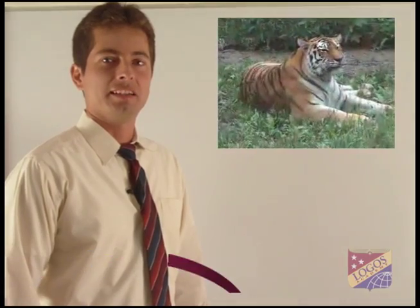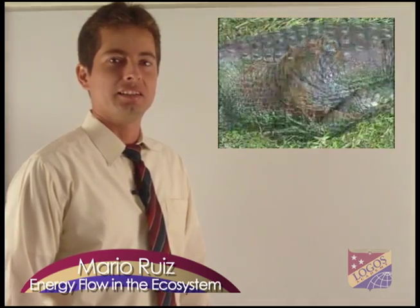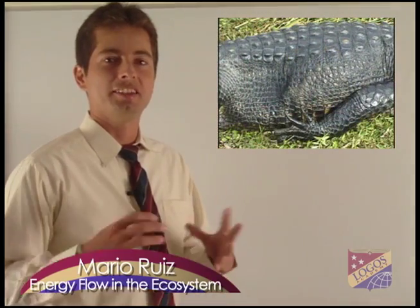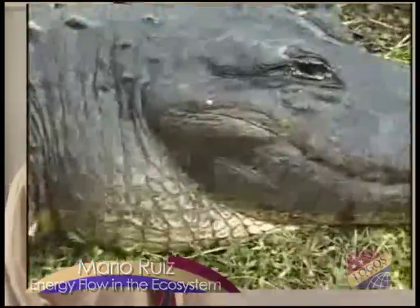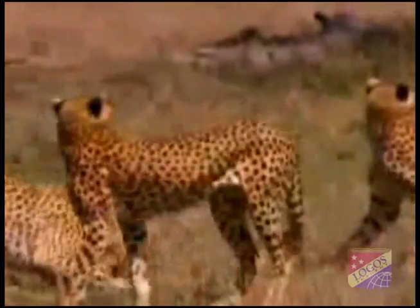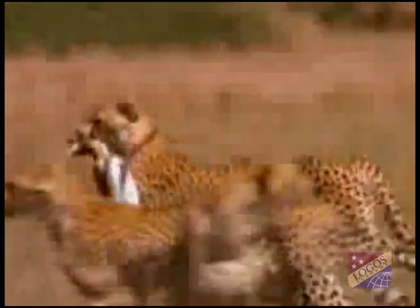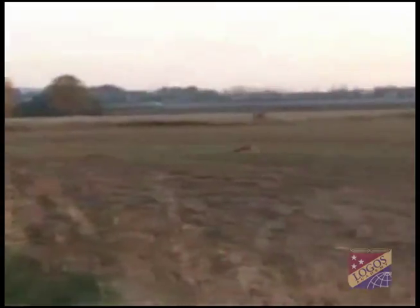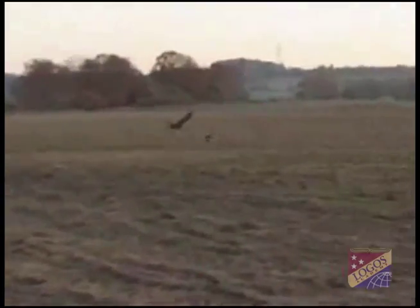When you imagine that there can be other organisms that will eat the carnivores, we find the tertiary consumers. These organisms are also called carnivores; however, they are on top of the food chain because they are capable of eating not only the primary consumers but also other carnivores. An example of this would be the eagle, which could eat a rabbit just as well as a small carnivore.